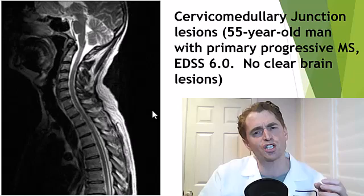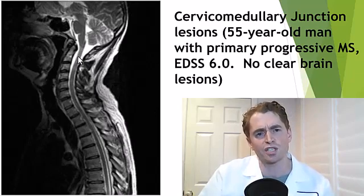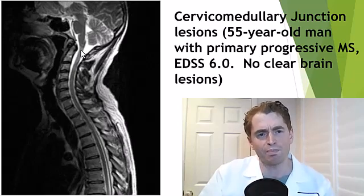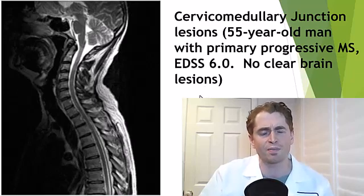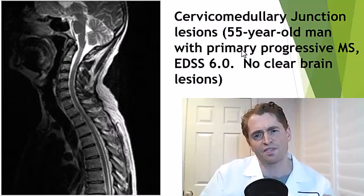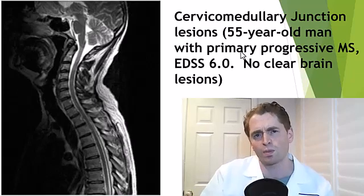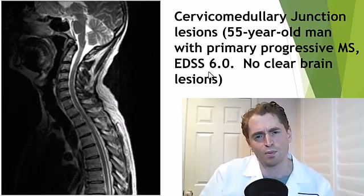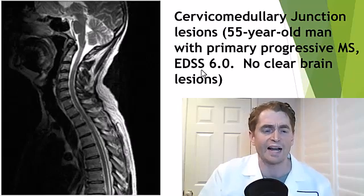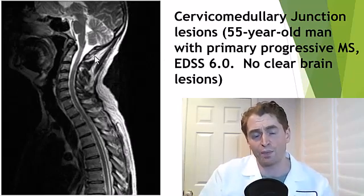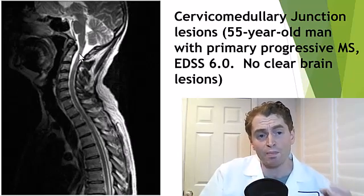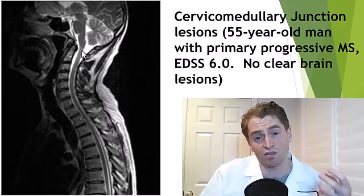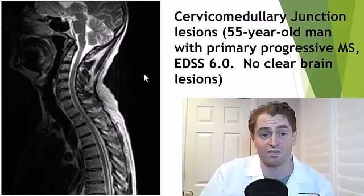Next is an example of a cervical medullary lesion — a lesion that bridges the upper cervical spine into the medulla, the bottom of the brain stem. This is an example from a unique situation: a 55-year-old man who actually has no other lesions in the spine or brain, which is very atypical of multiple sclerosis. He has a primary progressive phenotype and an EDSS score of six, meaning he needs a cane to walk 100 meters. This is quite rare. Usually these lesions are associated with typical MS plaques, but in general, cervical medullary junction lesions are associated with progressive weakness of the limbs and often a progressive course of MS.